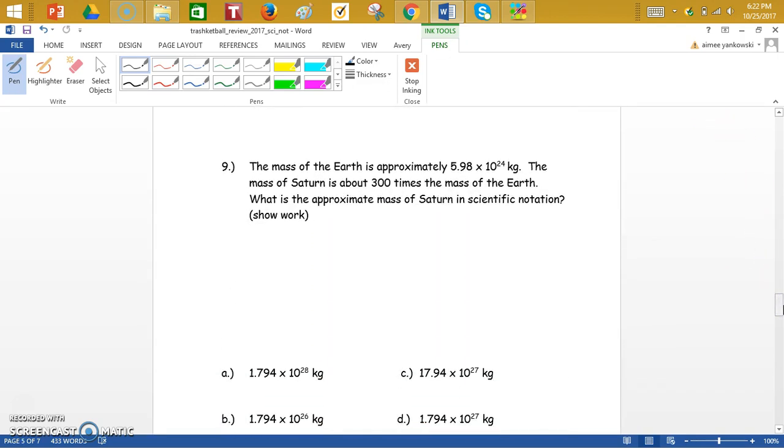Number 9. It says the mass of the Earth is approximately 5.98 times 10 to the 24th kilograms. The mass of Saturn is about 300 times the mass of the Earth. What is the approximate mass of Saturn in scientific notation? So it's 300 times greater than the Earth. So we have to take our 5.98 times 10 to the 24th and multiply that by 300.